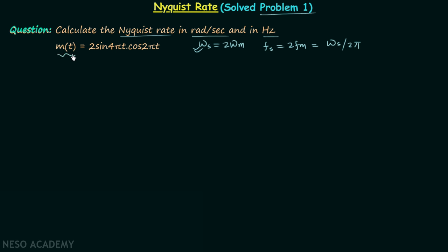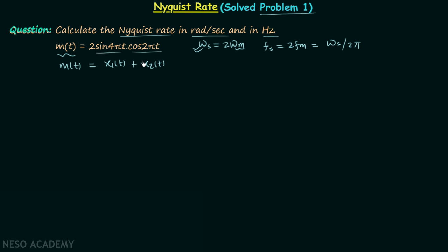The message signal m(t) = 2·sin(4πt)·cos(2πt). We will first calculate ωm so that we can calculate ωs and fs. To find ωm, the maximum frequency component, we need to express m(t) as a sum of signals. Currently m(t) is a product of two signals, so we need to convert it.